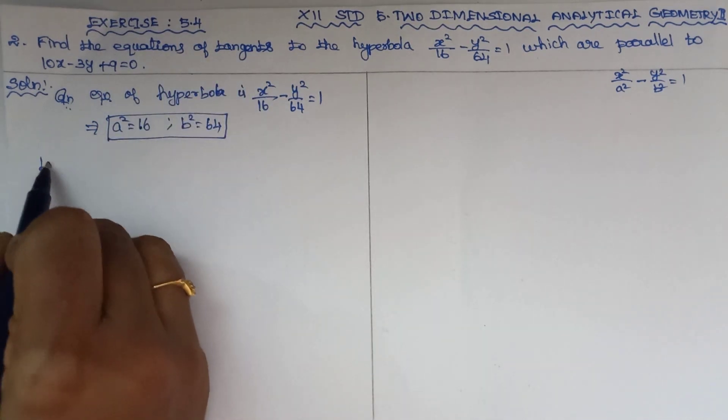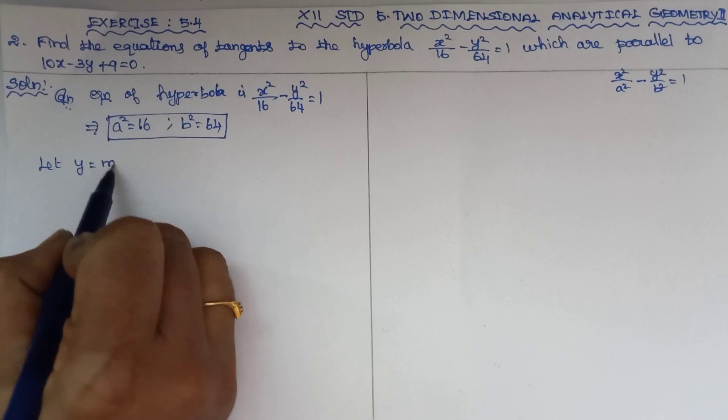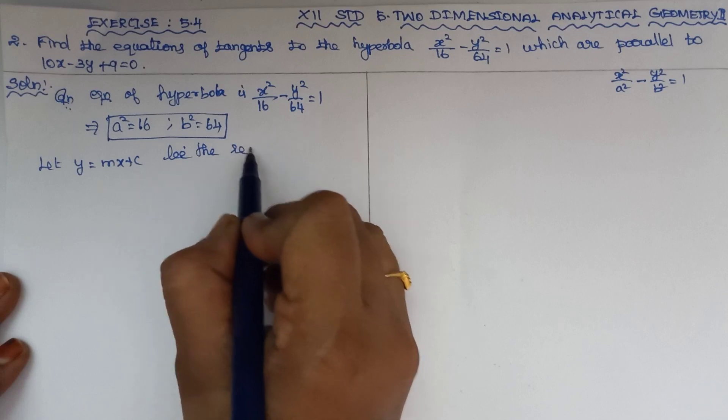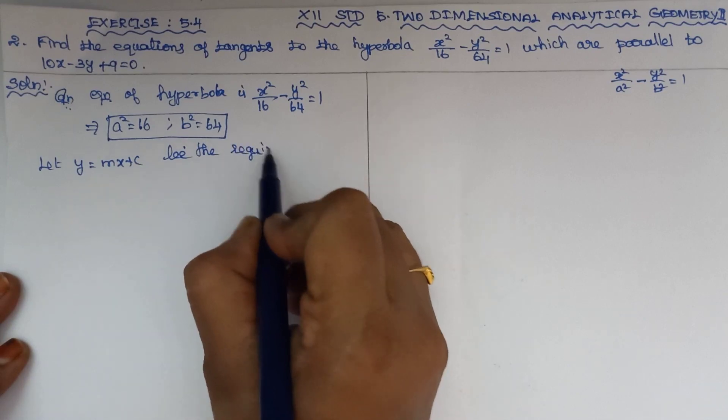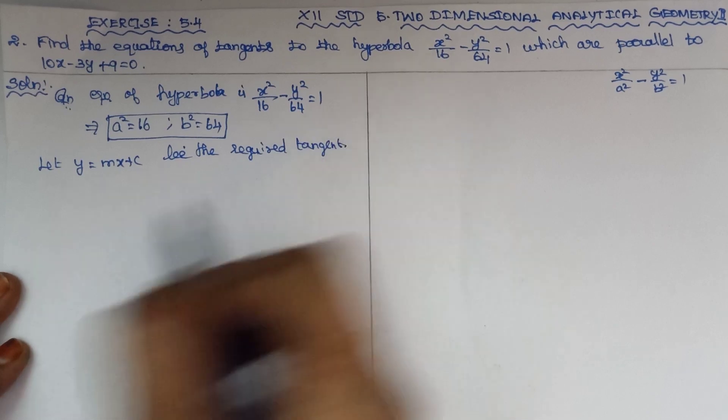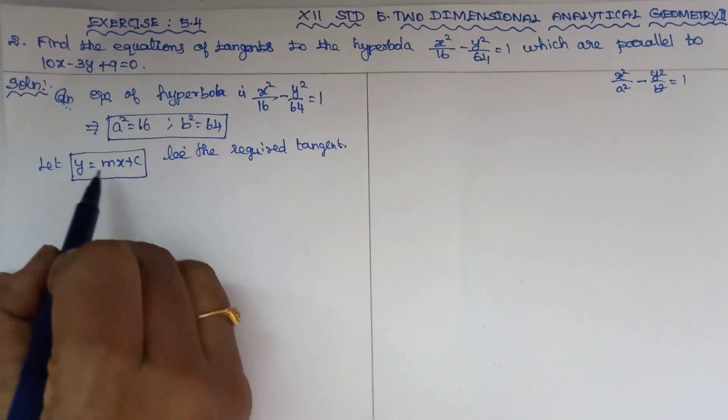Let y equal to mx plus c be the required tangents. The tangent equation is a straight line, and in a straight line y equal to mx plus c.